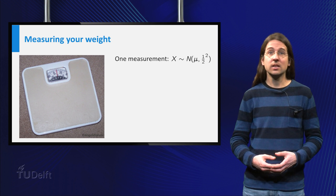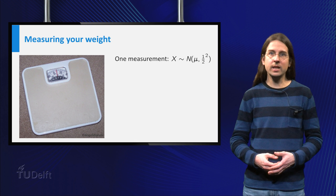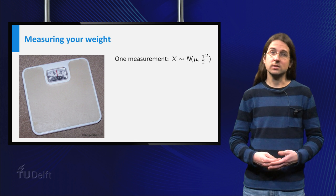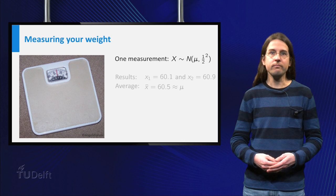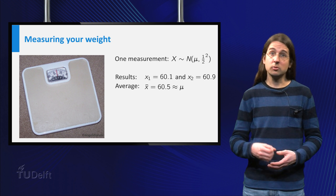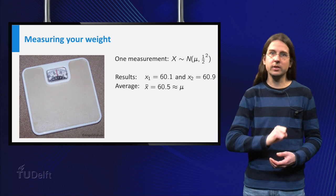Suppose the scale is such that the result it gives is normally distributed with mean your actual weight, and standard deviation sigma equals half a kilogram. If you measure your weight twice in a row, it gives the results 60.1 and 60.9 kilograms.